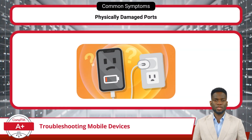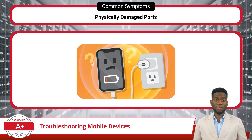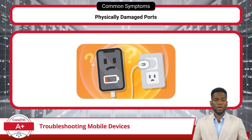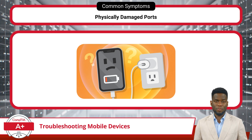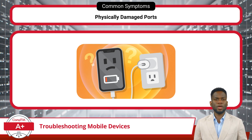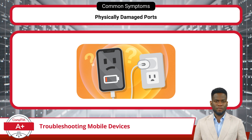Physically damaged ports present a significant hindrance to mobile device functionality, often manifesting as the inability to charge. This issue arises when the charging port sustains physical damage due to mishandling, accidental impacts, or exposure to moisture. Users may be unable to establish a charging connection despite repeated attempts. The device may also lose the ability to connect with accessories or peripherals. A great first troubleshooting step is using a replacement cable to determine whether the port itself is the problem or if the cable is faulty.